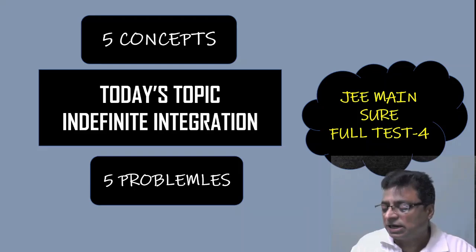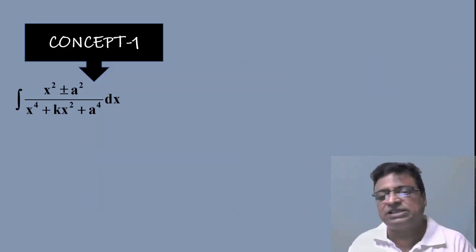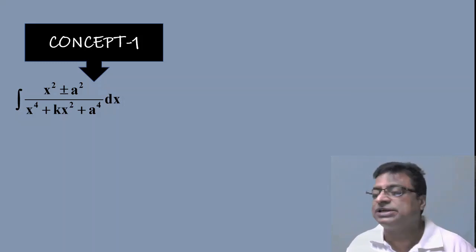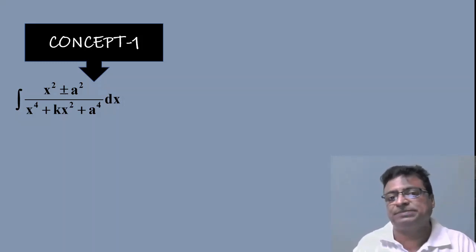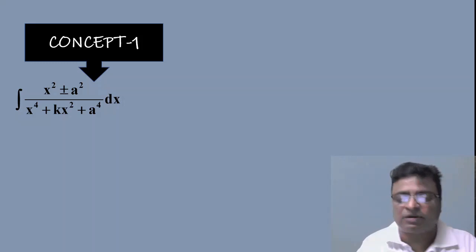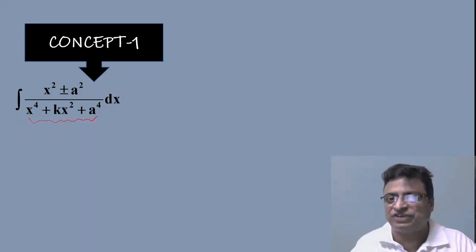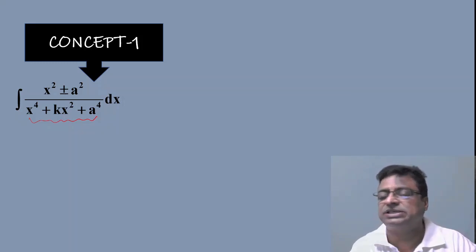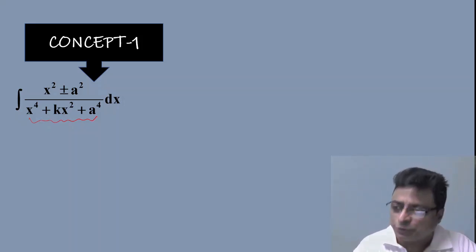Now coming to the five important concepts under indefinite integration. Concept number one: this is a favorite concept for both JEE Advanced and JEE Main aspirants — questions have been asked and repeated several times under this concept. If your integrand is in the form (x² ± a²) / (x⁴ + kx² + a⁴), then the step one is to divide both the numerator and denominator by x².